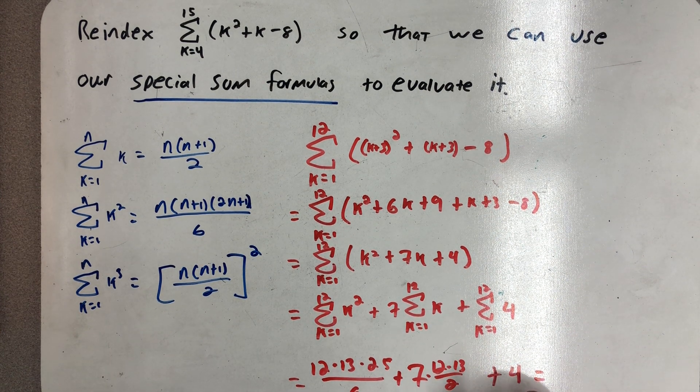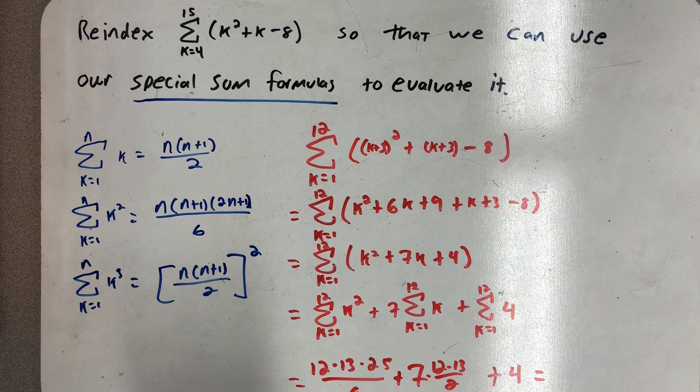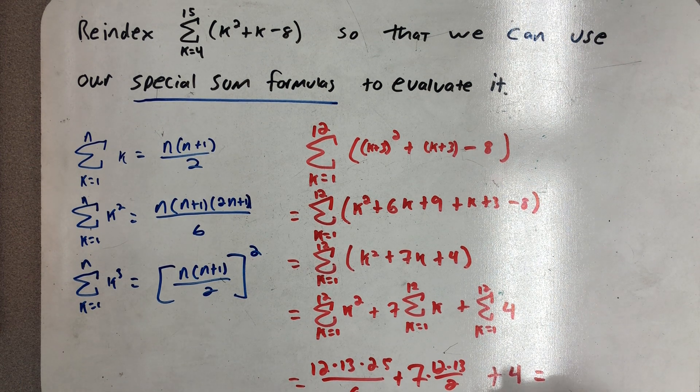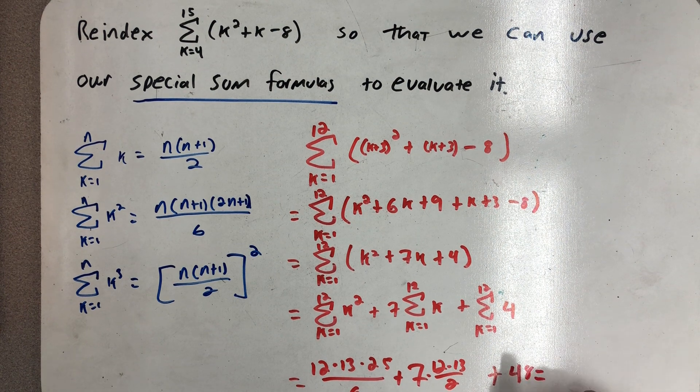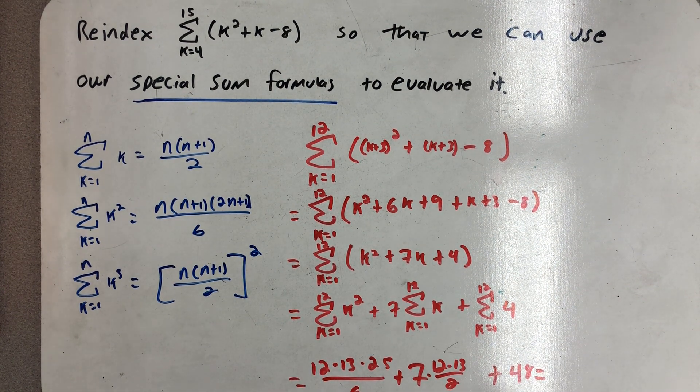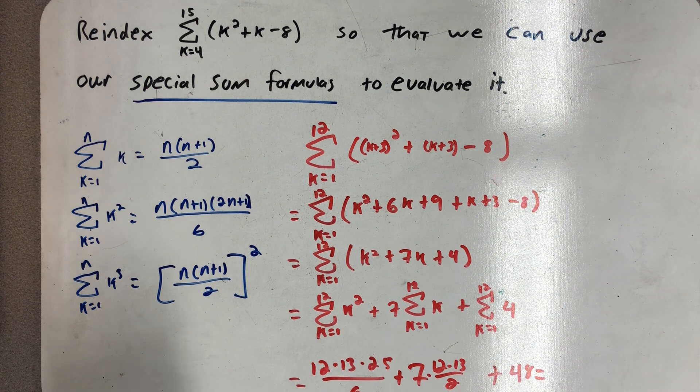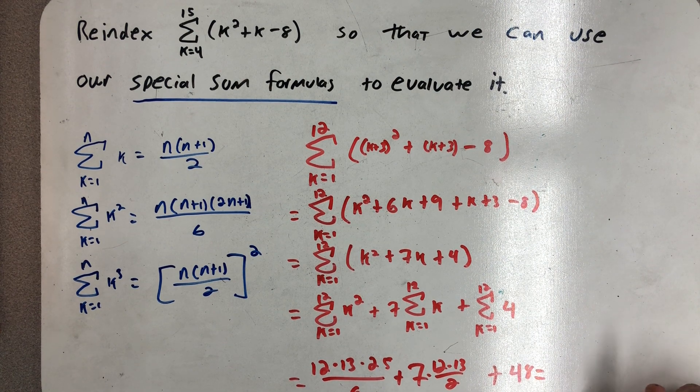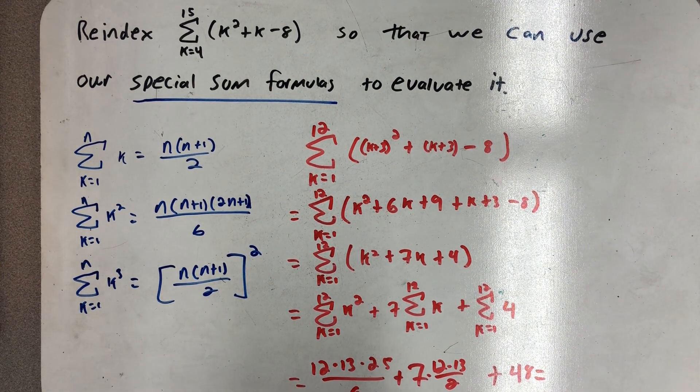And that's 546. I'm just going to double check that one. All right, and then plus 48. So I have 650 plus 546 plus 48 is 1,244. And there's my final answer.